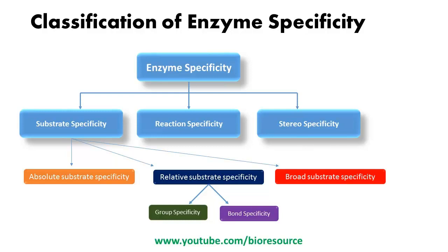Substrate specificity can be further categorized into three different types: absolute substrate specificity, relative substrate specificity, and broad substrate specificity. Within relative substrate specificity, there are two further classifications: group specificity and bond specificity.